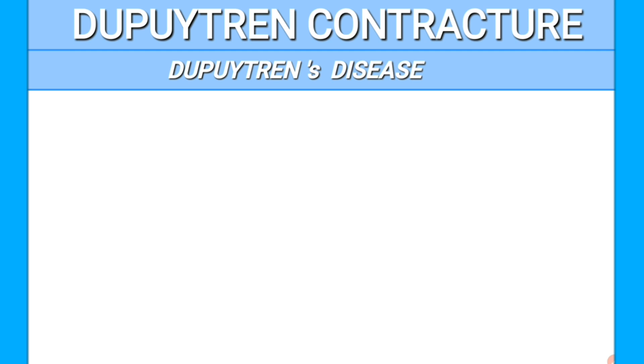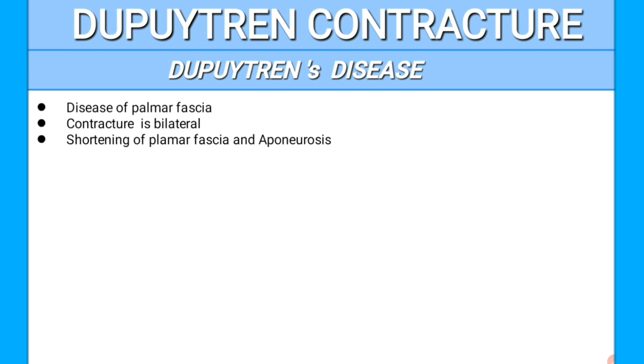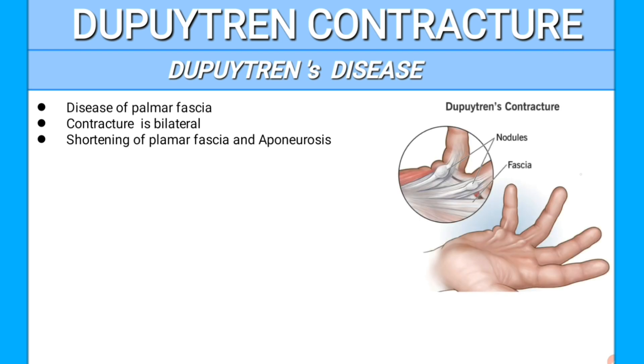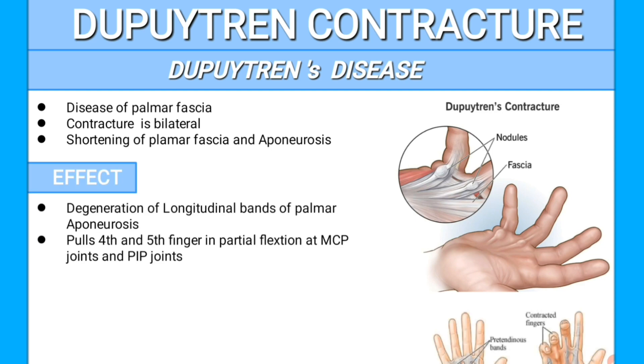The topic is Dupuytren's contracture. Contracture is a fixation or tightening of muscle, tendon, ligament, or skin that prevents the normal movement of the associated body part. Dupuytren's contracture, also known as Dupuytren's disease, is a disease of the palmar fascia. The contracture — meaning fixation of the skin — is bilateral, affecting both sides, and causes shortening of the palmar fascia and aponeurosis.